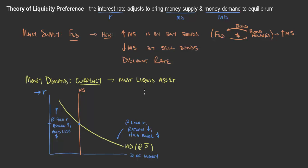This generally is the theory of liquidity preference — we balance money demand and money supply through the interest rate, which gives money demand its downward-sloping effect. As a result, we can think about what happens if there's a change in the money supply, how that impacts the economy, and more importantly, how that impacts aggregate demand. That's what we'll focus on next.